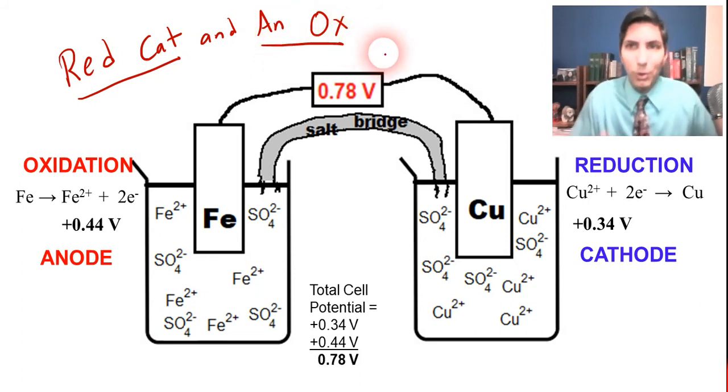Or if that's too corny for you, which it might be, then you can also remember that oxidation and anode both start with vowels, while reduction and cathode both start with consonants. So that's another way to remember how this works.